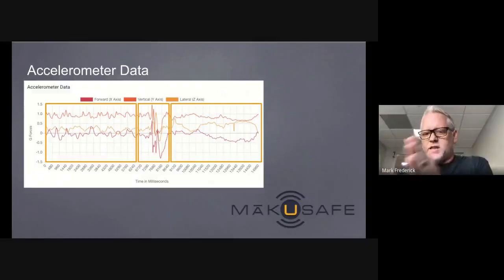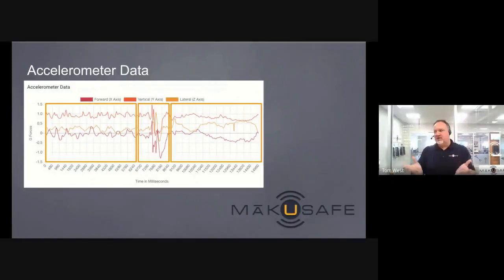We do have a special analysis that we do for repetitive motion. If we saw this happening repeatedly over and over in this 15 seconds, we have a model that can identify that as well, and it would say, wow, this person is having a repetitive forceful motion that's part of their work day that could lead to some type of repetitive motion injury.